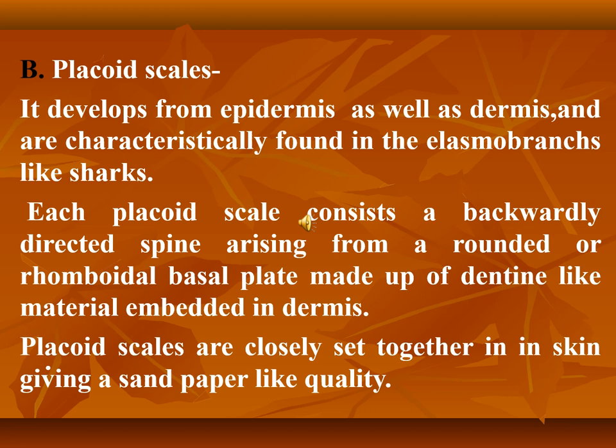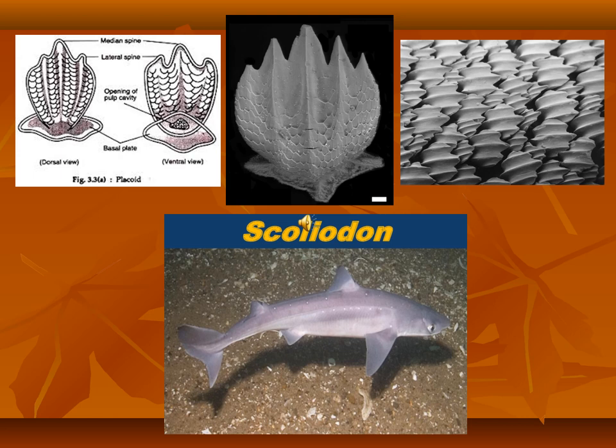The second type of scale is the placoid scale, which develops from both epidermis and dermis and is characteristic of elasmobranch species like Scoliodon. Each placoid scale consists of a backwardly directed spine, which is trident-shaped, arising from a rounded or rhomboid basal plate. In this slide you can see the structure of the placoid scale with its trident spine and basal plate, with a pulp cavity in which living cells, blood vessels, and nerve cells are present.